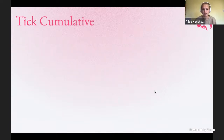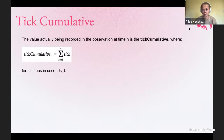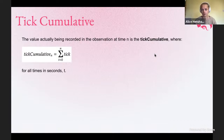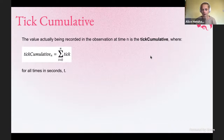What is stored in those observations from the tick point of view is something called the tick cumulative. We don't just store what tick — what price the pool was at at that moment. We actually store the tick cumulative at that moment, which is essentially the sum of all of the ticks so far in the history of the contract at every point in time. At time zero the tick was added, then at time one the tick gets added again, and that continues onwards.